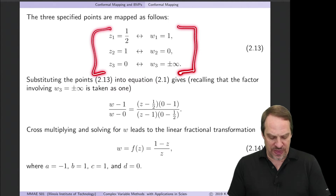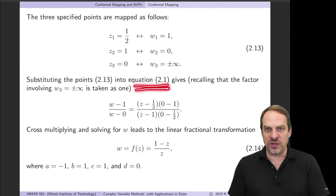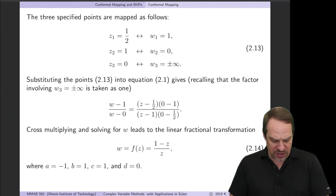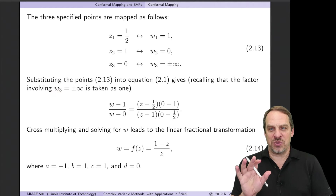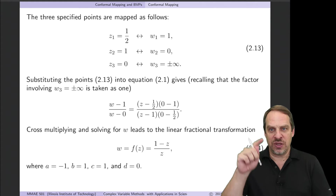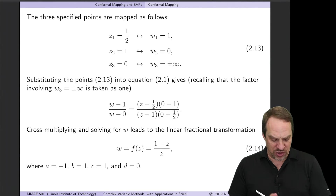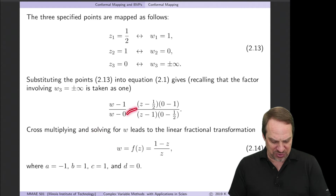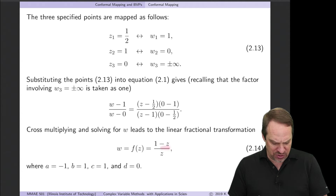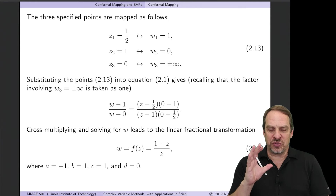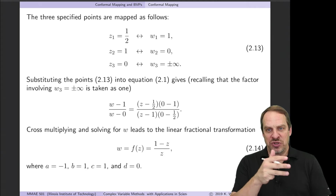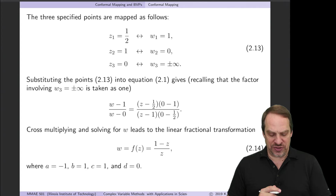Using those three pairs of points substituted into equation 2.1, which relates the w's and z's, we get our expression. On the left-hand side, since w3 is infinite, the factor involving w3 in the numerator over the corresponding denominator factor just becomes one, leaving only one factor in numerator and denominator. Solving for w by cross-multiplying gives w equals (1 minus z) over z. So a equals minus 1, b equals 1, c equals 1, and d equals 0 in the general fractional transformation.